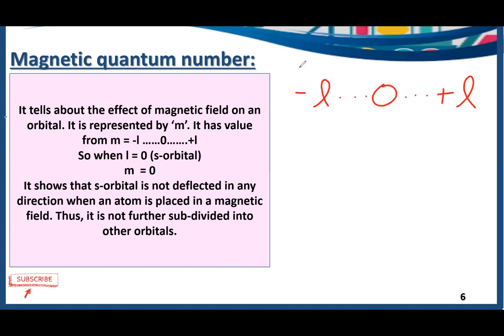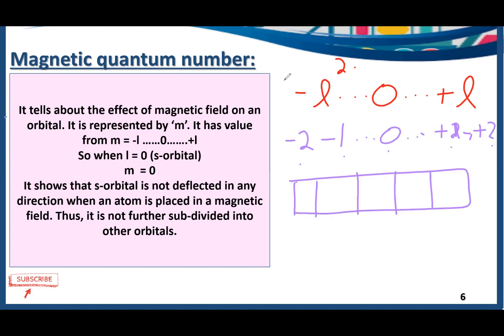For the d subshell, l equals 2, so m has values −2, −1, 0, +1, and +2 — giving us five magnetic quantum numbers. When placed in a magnetic field, the d subshell is deflected in five different directions, which is why it has five orbitals.